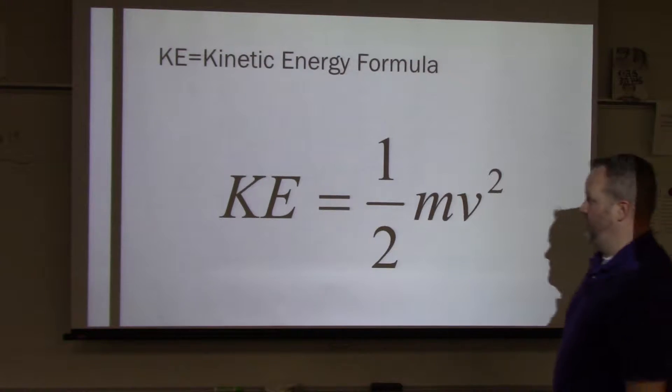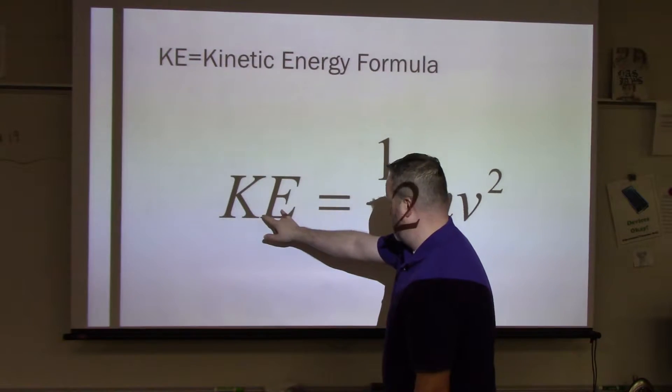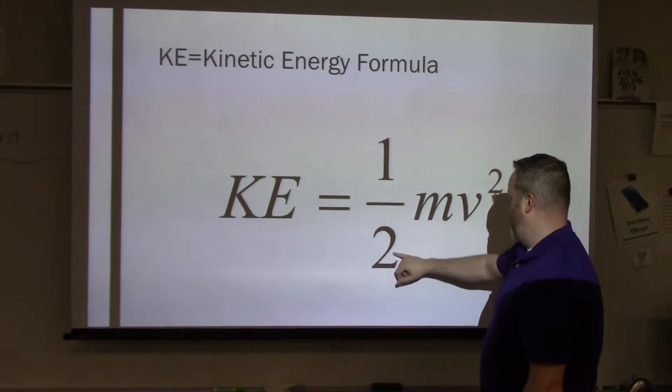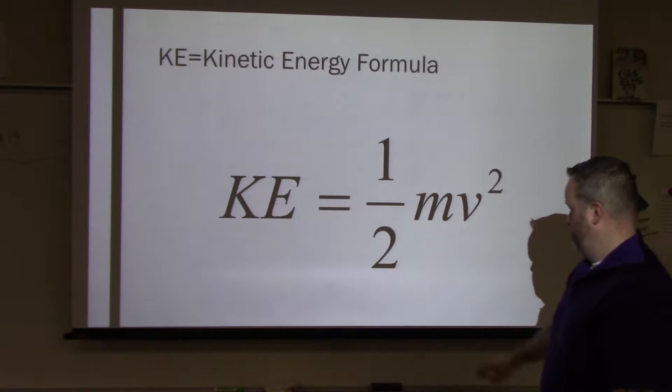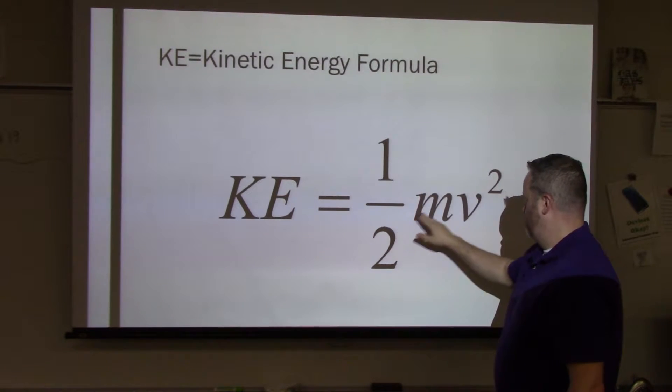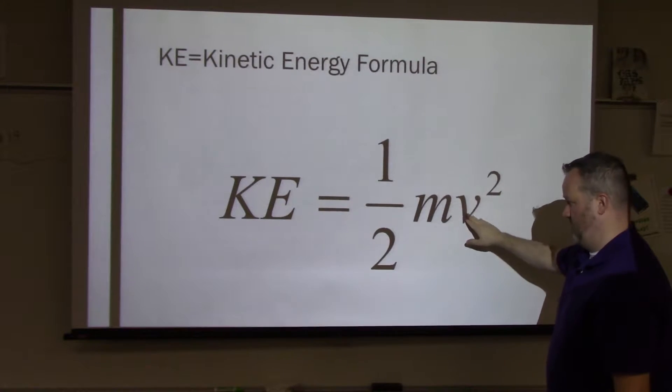Kinetic energy, the formula is KE or kinetic energy equals one-half mass velocity squared. So remember you're multiplying four things together, 0.5 or one-half mass velocity velocity.